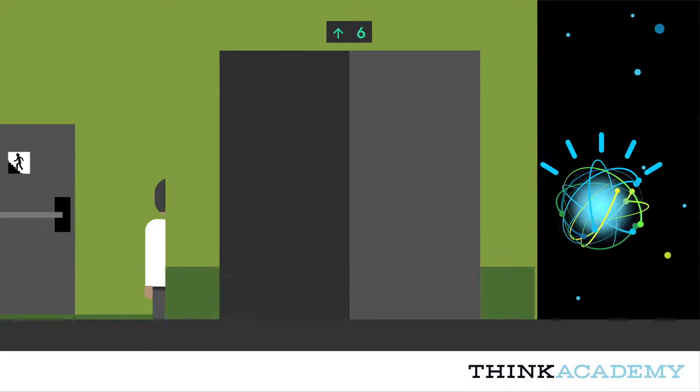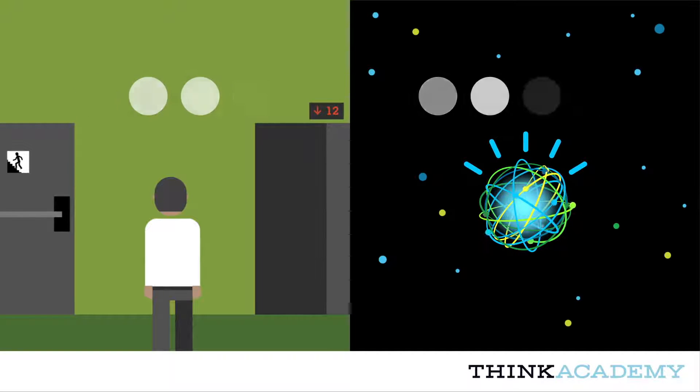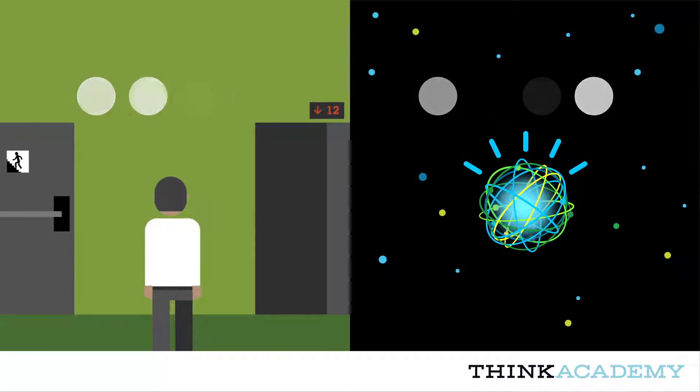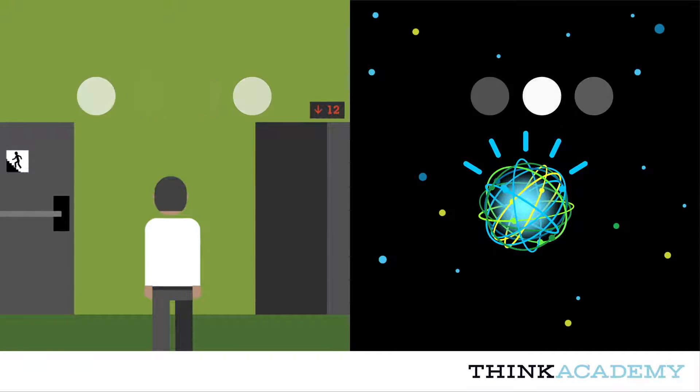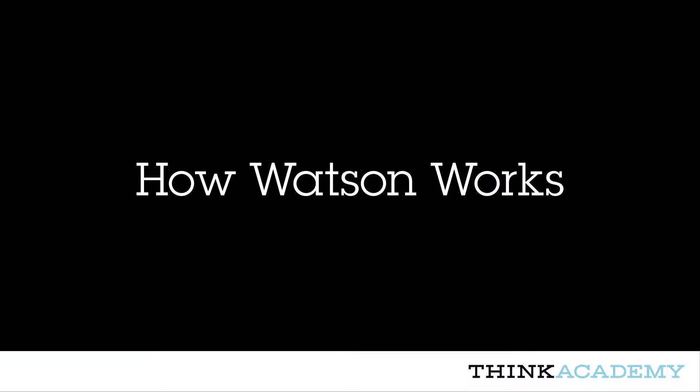Just as humans become experts by going through the process of observation, evaluation, and decision making, cognitive systems like Watson use similar processes to reason about the information they read. Watson can also do this at massive speed and scale. So how does Watson do it?